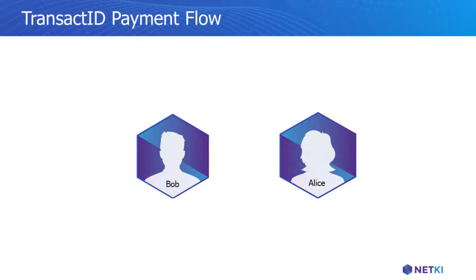Bob and Alice want to transact on a blockchain. In the same way Alice currently shares her wallet address, she sends Bob a URL for a private, secure, encrypted connection out of band.